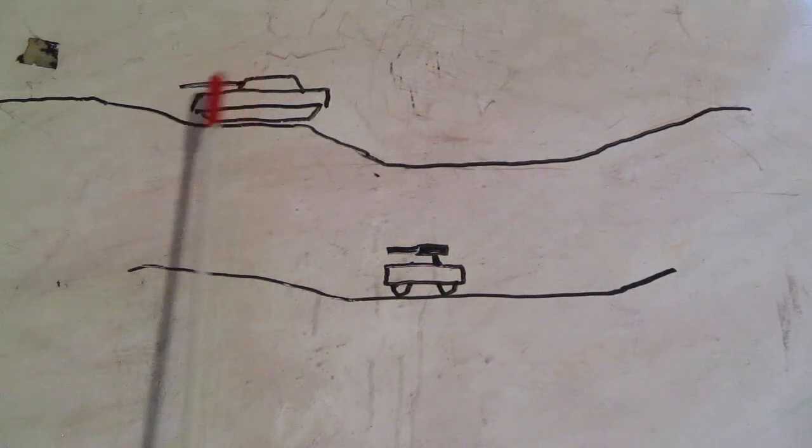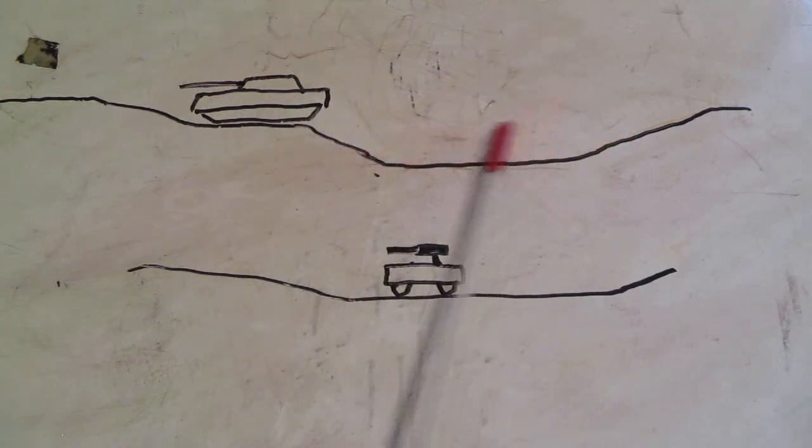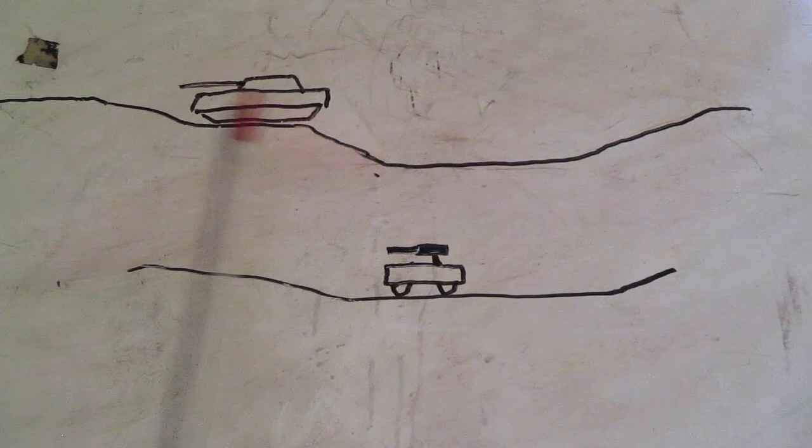So that way you have at least a fighting position that can be used quickly if the battle starts sooner than you expected. After you get the hull down, that's when you dig down the back of it to get your turret down. The spoil that's brought out typically gets pushed to the sides by the dig assets, by the team.